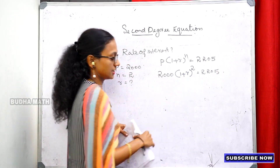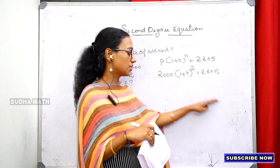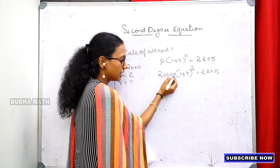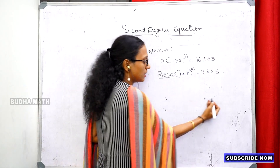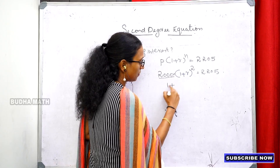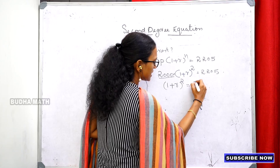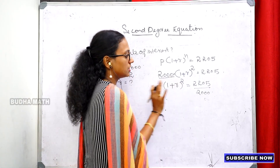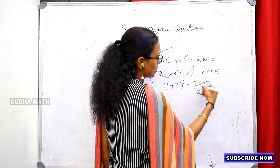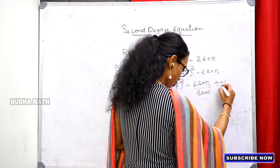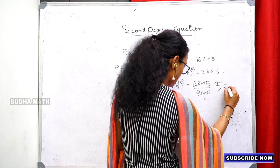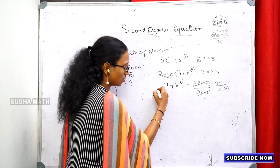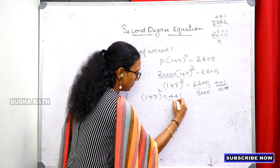We calculate: (1 plus r) squared equals 2,205 divided by 2,000, which equals 441 by 400. So 1 plus r equals root of 441 by 400.